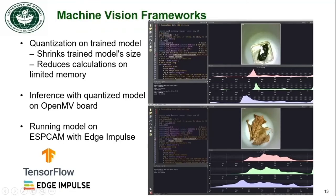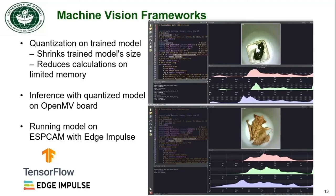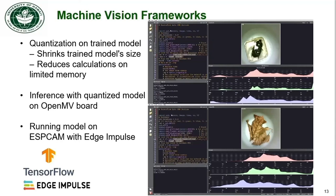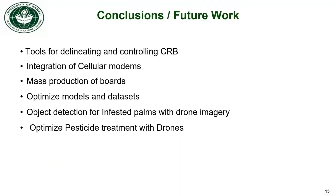After training the model on a computer, we need to convert it to a quantized model in order to run it on a microcontroller. This will shrink the model size and make it suitable for the limited memory on camera boards, reducing accuracy by just a few percent. Here is a video of classification with the quantized model on an OpenMV board. We have developed tools for delineating and controlling the infestation of CRB on Oahu.